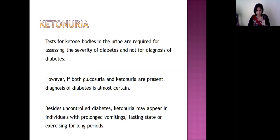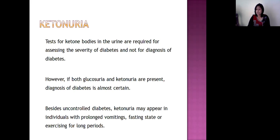Ketonuria — detecting ketone bodies in the urine — actually indicates uncontrolled diabetes mellitus, so it is useful for assessing the severity of the disease rather than diagnosis. If glycosuria and ketonuria are both present, diagnosis of diabetes mellitus is almost certain. Besides uncontrolled diabetes, ketonuria may appear in individuals with prolonged vomiting, fasting/starvation, or during prolonged exercise.